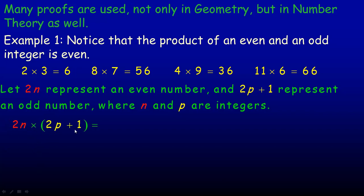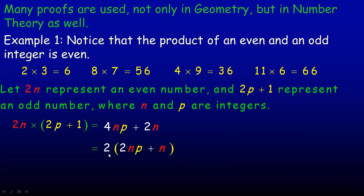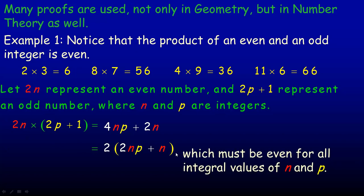So we're looking at the product of an even and an odd. Multiplying 2n by (2p + 1): the 2n distributes in — 2n times 2p gives 4np, and 2n times 1 gives 2n. There's a common factor of 2, so factoring it out gives 2 times (2np + n). Since n and p are integers, (2np + n) is an integer — so this is 2 times an integer, which means it must be even. That proves that multiplying an even by an odd is always even for all integer values of n and p.